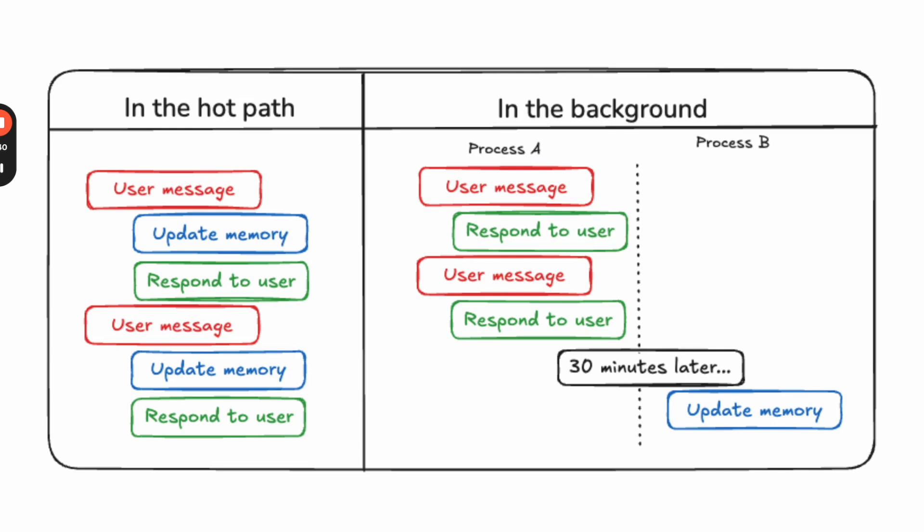There are pros and cons to each approach. In the hot path, it's very transparent when you're updating memory — you can show this to the user so they know what's going on. It's also real-time, so if they start a separate conversation right away, they have that updated memory. The downsides are that it can add some latency and makes your application logic more convoluted, because you have both your core application logic and the logic for updating memory. When it happens in the background, the pros and cons are flipped: no latency is added, and you can cleanly separate application logic from memory-update logic. However, because it's happening in the background, you can't easily surface that to the user, and depending on how you set it up, the memory may not be updated when you go to start a new conversation. A key part of running memory in the background is figuring out exactly when to trigger that background run, which adds additional logic to think about.